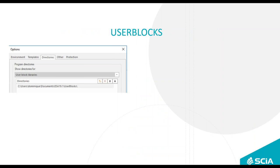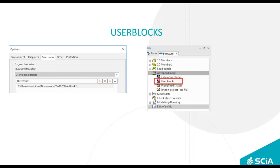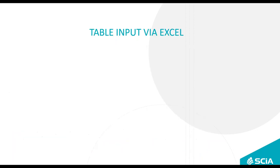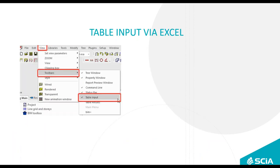User blocks are really interesting. Once you've modeled a small part — for example a lattice beam — you can save it to a specific location. The part remains editable. Go to Setup > Options and Directories, then to the User Block Libraries. Once saved there, from any project in CSE Engineer, no matter the project type, you can insert it into the structure directly via the user block menu. This is a real time-saver.